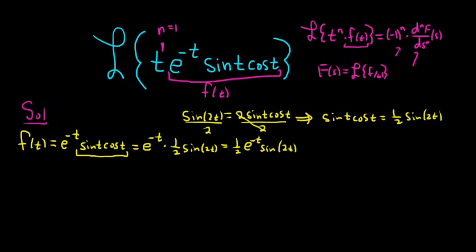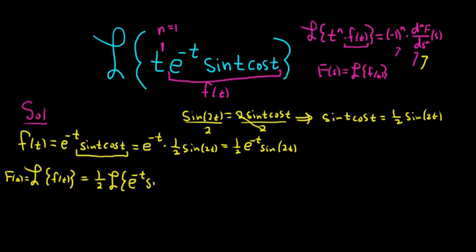All we have to do now is compute the Laplace transform of little f, and once we do that we'll take the derivative and plug it into the formula. So the Laplace of little f — this is going to be our big F of s for the formula — we can pull out the one half, giving us one half times the Laplace of e to the negative t sine 2t.